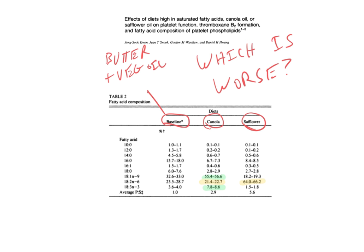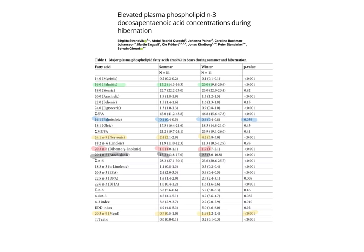All of the meals are prepared for these people in a test kitchen, so we have a really good idea that they're actually eating these diets. Then they measured the plasma phospholipids, and that gives us a really good idea of what happened in these humans.